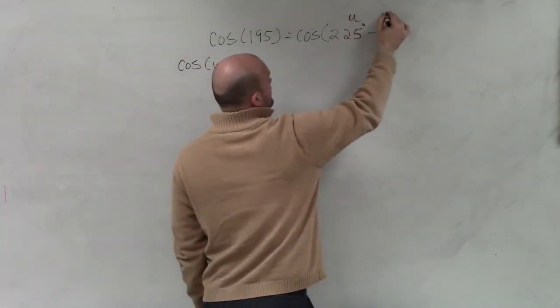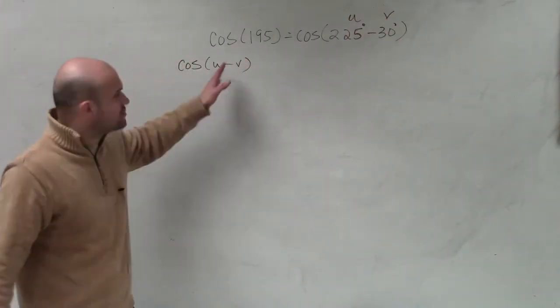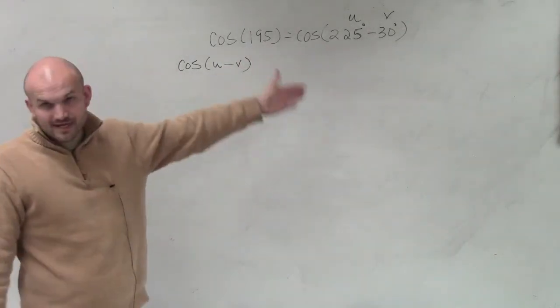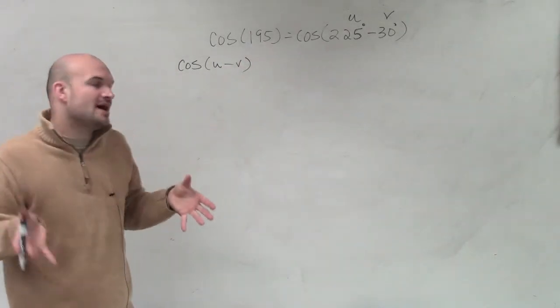So it's subtraction, u minus v. Well, that's my u, and that's my v. Remember, you're subtracting u minus v. So it's not negative 30 degrees. It's going to be you're taking the positive value of this.